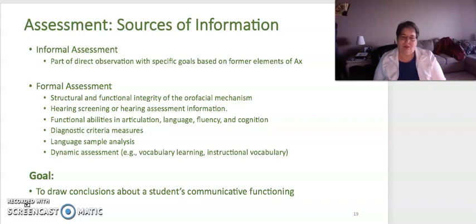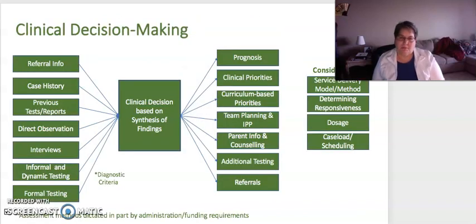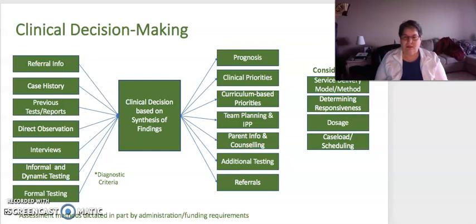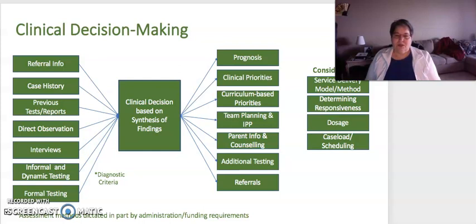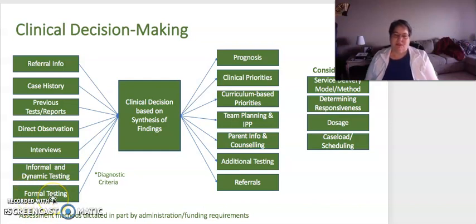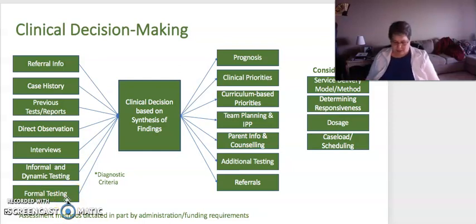Ultimately, your goal is to draw conclusions about a student's communicative functioning in the classroom and in school. I put together a diagram to give you a sense of the different elements that would be included. An oral exam would be included as well — all of the typical aspects of assessment — drawing from multiple sources of information outside of the child that give you information related to functionality.